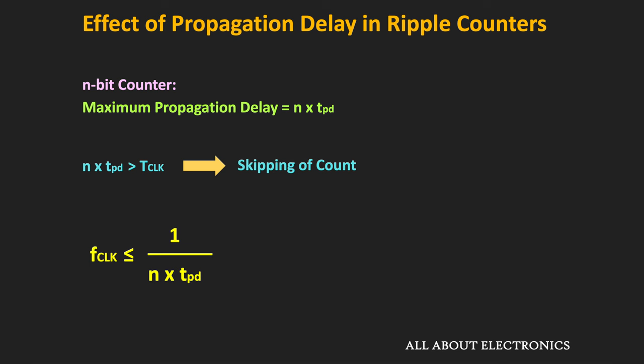To avoid the problem of skipping of the count, the clock duration should be more than the propagation delay of the counter. In other words, the clock frequency should be less than or equal to 1 divided by the maximum propagation delay of the counter. That means for the n-bit ripple counter, the maximum allowable clock frequency is equal to 1 divided by n times TPD. By satisfying this condition, we can ensure there is no skipping of the count. But still, we might observe the decoding error — that is, while decoding the output, we might observe transient states.